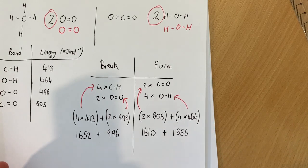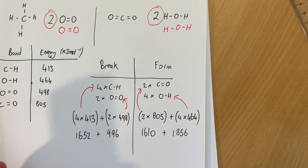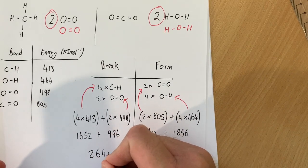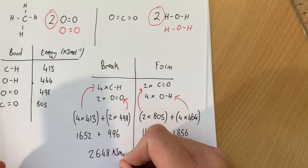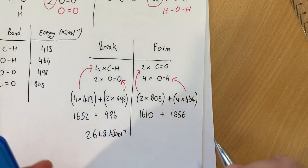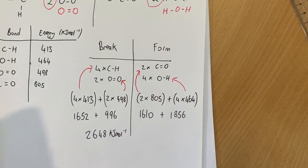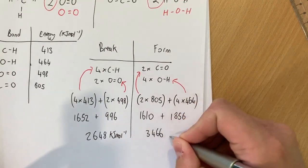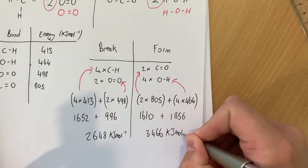Okay. Now we add the two sides together. So 1,652 plus 996. And the total for this side is 2,648 kilojoules per mole. The total on this side, 1,610 plus 1,856, is 3,466 kilojoules per mole.